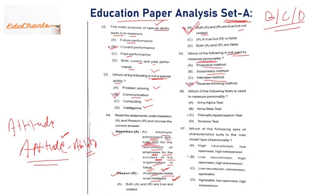Question 56: which test is used to measure personality? Army Alpha and Army Beta tests are intelligence tests. TTCT is the creativity test. But the personality test is TAT — Thematic Apperception Test — and CAT. These are personality tests, not intelligence tests.